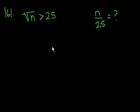So what could be a valid value for n divided by 25? Let's see if we can manipulate this a little bit. If we square both sides, we get n. The square of the square root of n is n, is greater than 625.